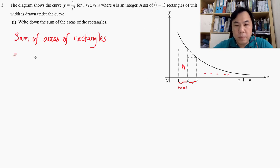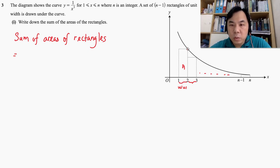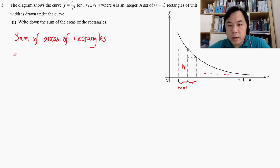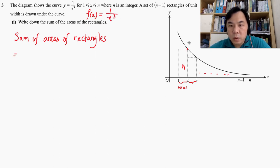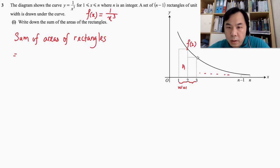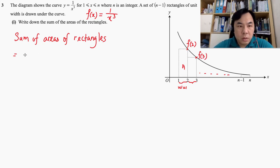Rectangle A is given by — we need to know the height of this rectangle. The height is actually given by this value here. We can let f(x) equal to 1 over x cubed. In order to obtain the height of this rectangle, all you need to do is substitute x equal to 2 into the function. For the next one, the height is given by f(3), and so on. So that will be one unit width and the height given by f(2).